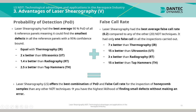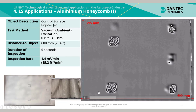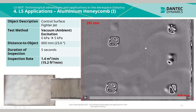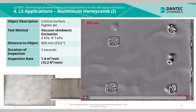In summary, Laser Shearography offers the best combination of probability of detection and false call rate for the inspection of honeycomb samples of any NDT technique — you have the highest likelihood of finding small defects without making an error. An example shows an aluminium honeycomb sample inspected with vacuum ambient excitation; six discontinuities are visible on the phase map. The inspection took approximately 5 seconds, yielding an inspection rate of approximately 1.4m² per minute. The six discontinuities include two instances of corrosion disbonding between the skin and core, one crack core in the upper left, and three indications of corrosion, crush cores, crack cores, and node bond splits on the right.